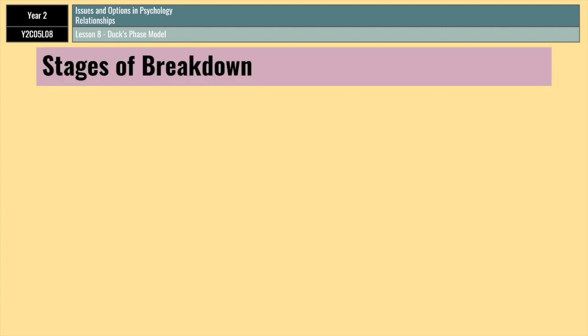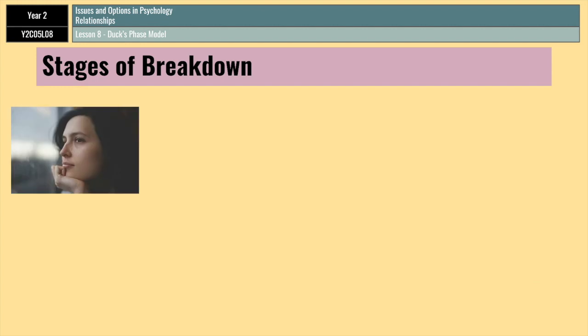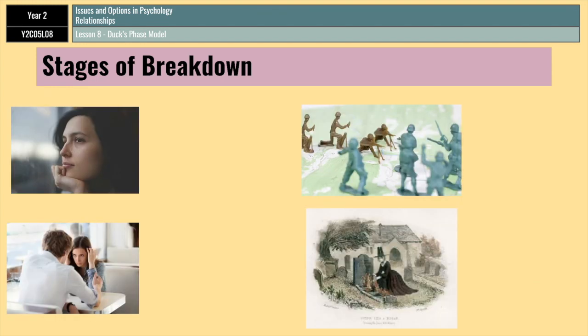According to the theory, there are four stages of breakdown that people go through. The first stage is called the intra-psychic stage. In this stage, a person admits to himself or herself that they're dissatisfied with their relationship, and they spend a lot of time thinking about the reasons for why that might be — reasons why they're dissatisfied, and also possible ways forward. The stage focuses very much on a person's internal thought process that occurs before they actually feel like they can confront their partner.